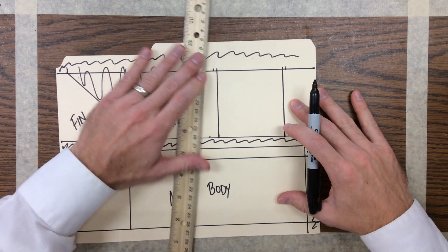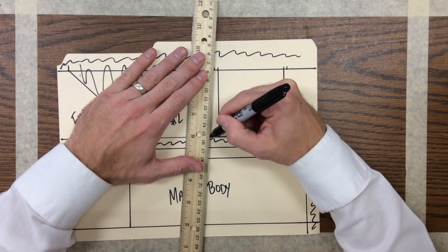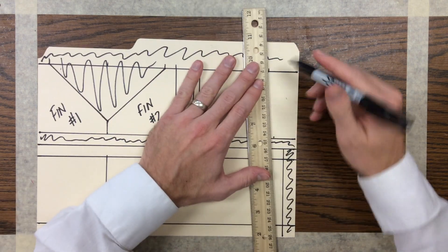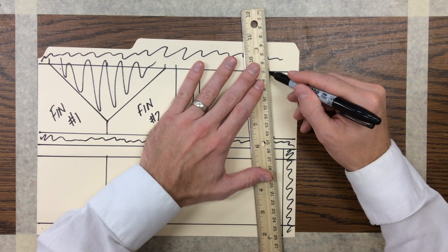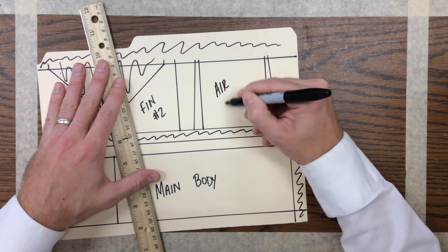And then to finish the air scoop, I'm going to connect those two diagonal dots here, and you have your air scoop.